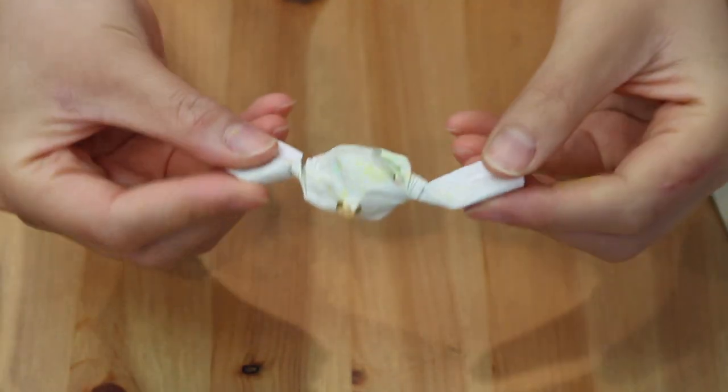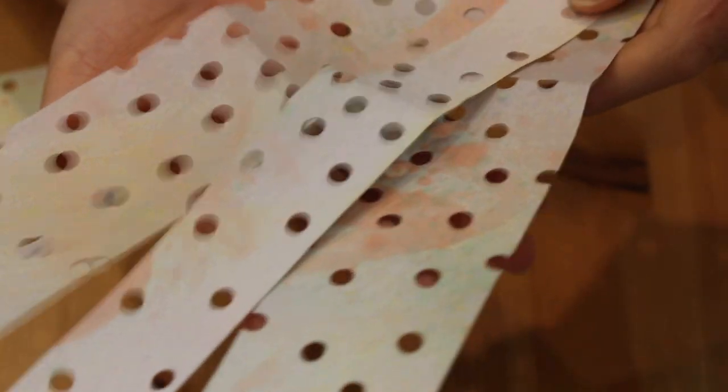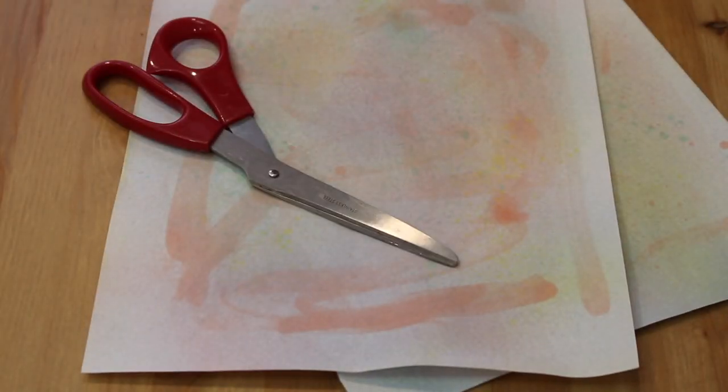The next bird toy is also really easy and it doesn't need to be perfect at all. I call this the Cage Weavers. You're going to need some of the colored paper that you made if you made any, some scissors, and a hole puncher.